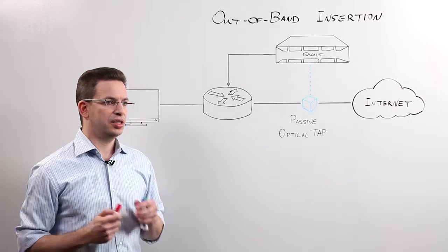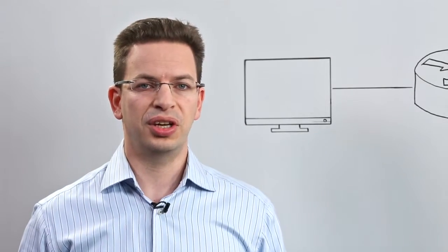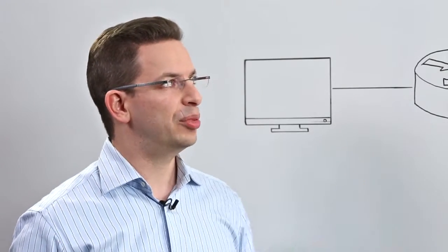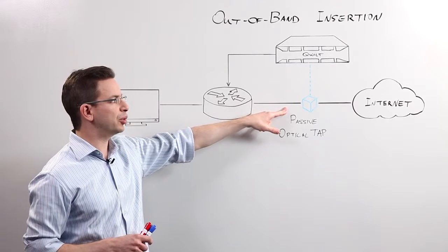The method that we chose at Qwilt is, instead of creating a bump-in-the-wire inline solution which affects the resiliency of the network, we have opted for an out-of-band insertion mechanism.